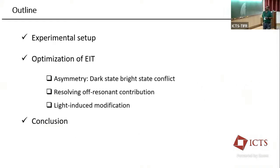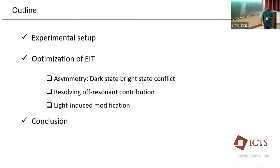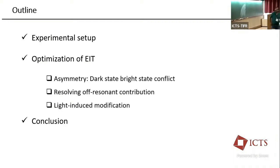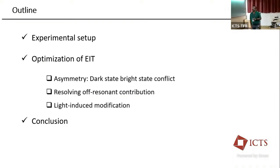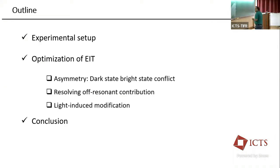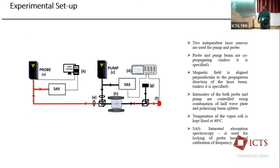I will briefly outline the talk: I'll take you to the experimental setup, then discuss optimization of EIT, covering three parts. First is asymmetry — my definition being any distortion in the transmission line shape where EIT is expected, whether due to closed-line excited states or any other cause. I will introduce this as a dark state/bright state conflict, then try to resolve off-resonant and non-resonant processes, and towards the end talk about light-induced modification, then conclude.